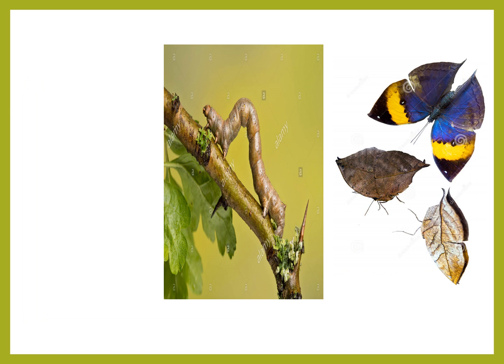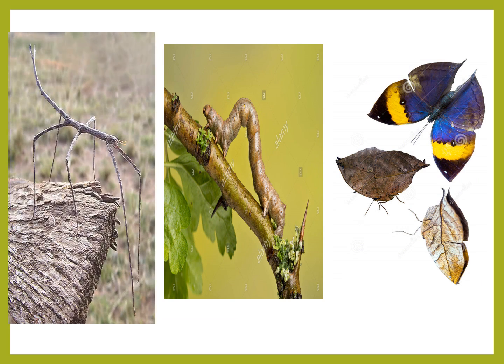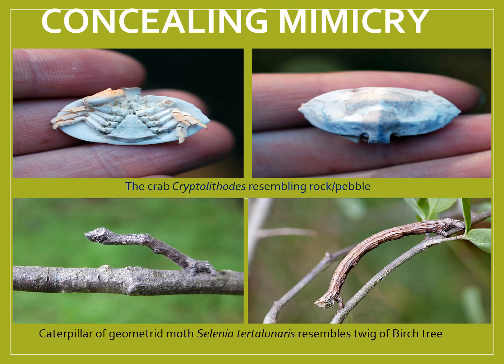These are examples of the geometrid moth, stick insect, and the dry leaf butterfly, which mimic their surroundings. This is the case of cryptolithodes crab, which resembles a pebble, and the geometrid moth larvae, which resembles the twig of a birch tree.